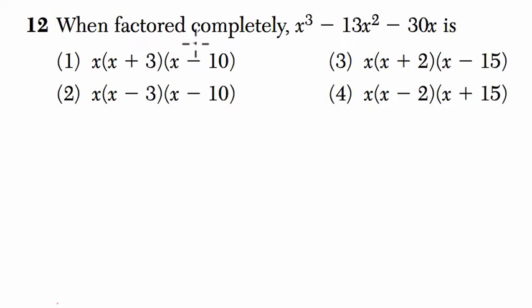Alright, so they say when factored completely, x to the third power minus 13x squared minus 30x is, which is the following.